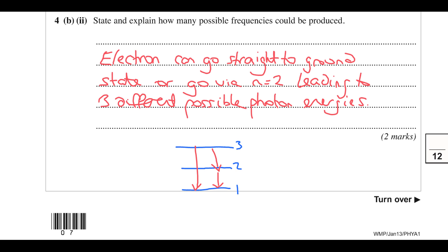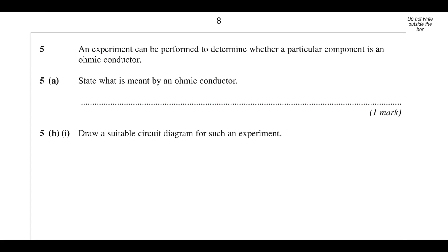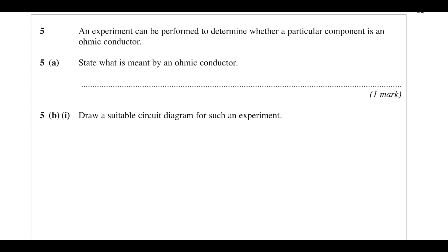Now on to some circuitry. We've got an experimental question about determining whether a component is an ohmic conductor. State what is meant by an ohmic conductor — it's when potential difference and current are directly proportional to each other.